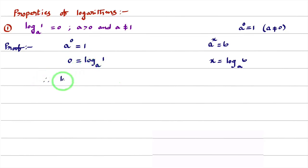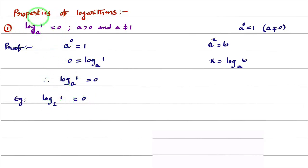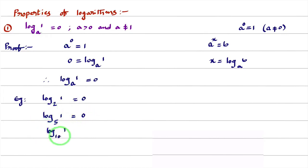Therefore, we proved that log 1 base A is 0. From now onwards, we use this property as a formula. For example, log 1 base 2 equals 0. Log 1 base 5 equals 0. Log 1 base 100 equals 0. So, log 1 base A is always 0.